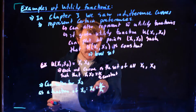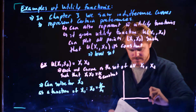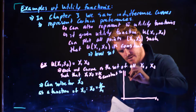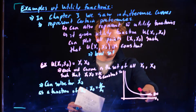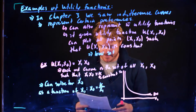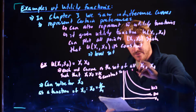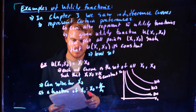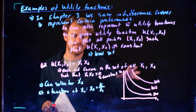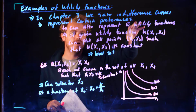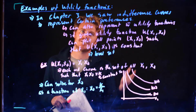We're plotting x1 and all the x2 values as a function of x1. We get curves showing all combinations where x1 times x2 equals 1, then equals 2, then equals 3, and so on. That's how we go from utility functions to indifference curves.